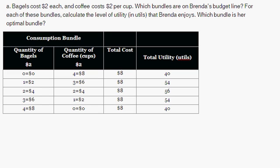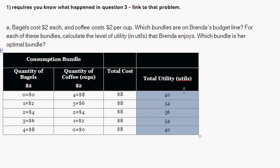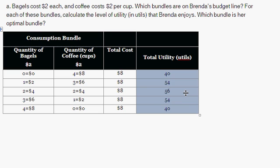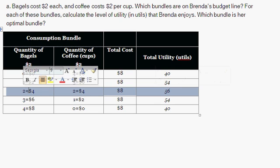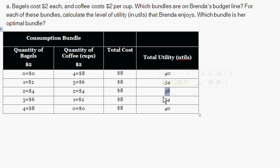These are all the consumption bundles that lie on Brenda's budget line. For each of these we have the total level of utility given to us. The optimal bundle is the one that maximizes Brenda's utility. Which one of these bundles maximizes her utility? The answer is 56 utils, since 56 is the highest. 56 total utils is associated with two bagels and two cups of coffee. So Brenda maximizes her utility by buying two bagels and two cups of coffee, giving her a total utility of 56.